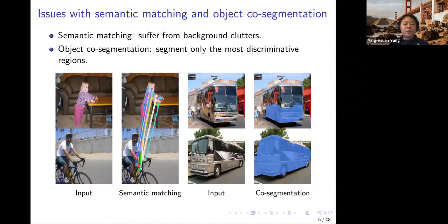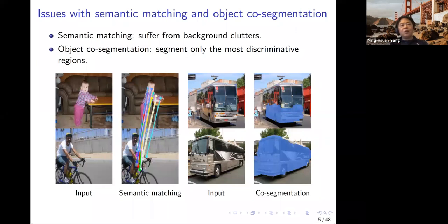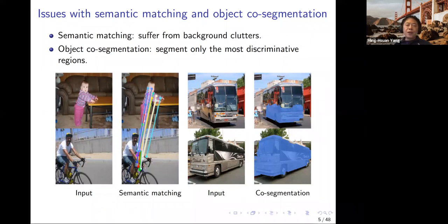Semantic matching or correspondence has been solved in many contexts. Early work used SIFT and other handcrafted features to find correspondence, but it is often sensitive to background clutter. If you have a foreground mask, that would help the semantic matching problem. On the other hand, for the co-segmentation problem, when you have two images of the same instance but operate on regions, often only the most discriminant regions are matched and segmented out. But if you have more correspondence between the two images, that can certainly help find the right mask.